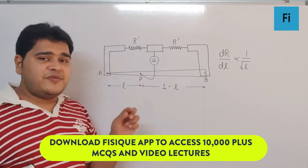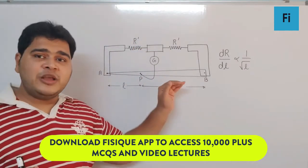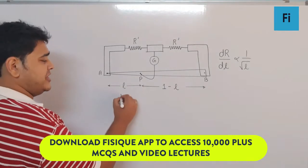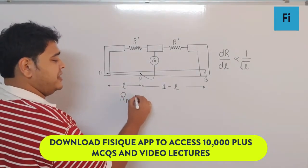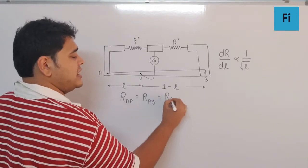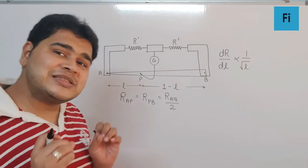At point P we are getting the null point, which means the ratio of these two resistances must be equal, and that means these two parts of the resistance have to be equal. So let's call R_AP equal to R_PB, equal to R_AB by 2. Basically those two resistances are equal.